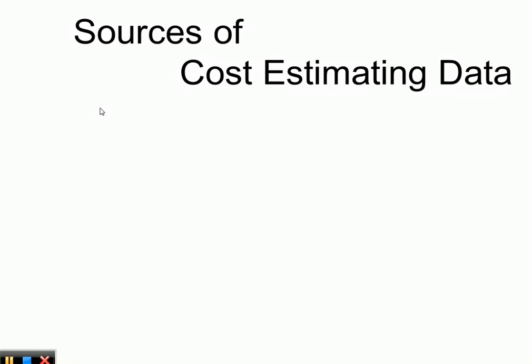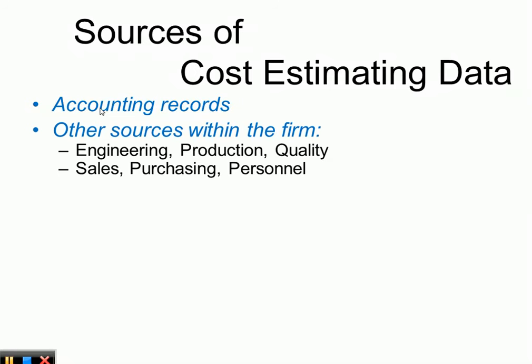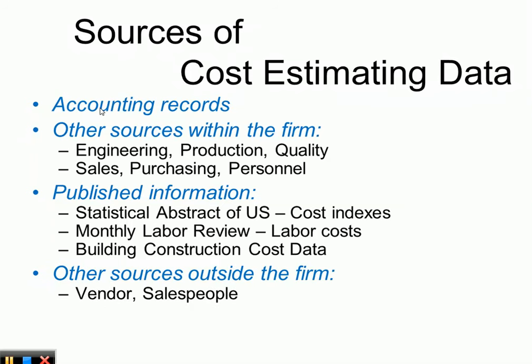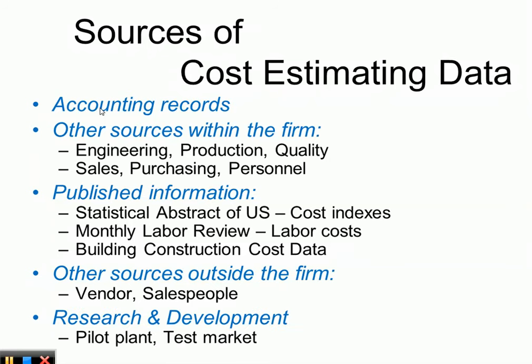Where do we get data to estimate costs? We can look into accounting records and other sources within the firm such as engineering, production, quality, sales, purchasing, and personnel. There is also published information available, for example statistical abstracts of the U.S., which includes cost indices, and the monthly labor review where you get labor costs. Another source is building construction cost data, and there are external sources including vendors and salespeople.